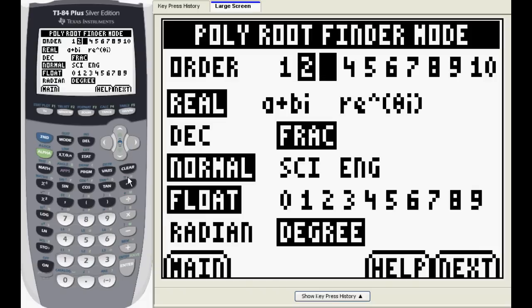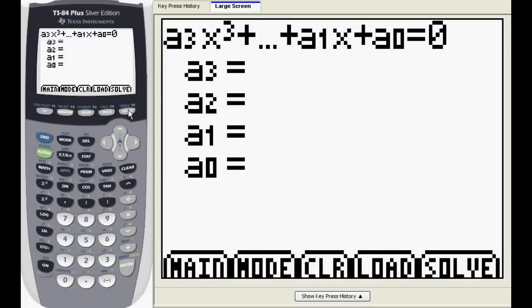The default options are fine for our problem, except we need to change the order from 2 to 3. Next we'll need to enter the coefficients from the largest exponent to the smallest. In this case, the coefficients are 1, negative 6, 11, and negative 6.